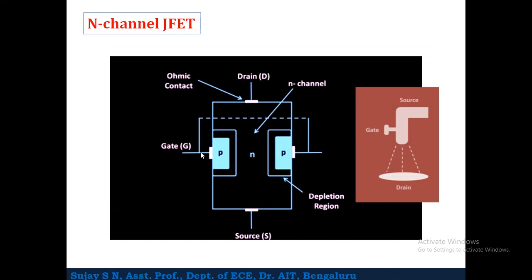For N-channel JFET: this device consists of three terminals. The drain terminal is at the top, the source terminal is at the bottom, and the two P regions on the sides are taken as the gate terminal. The two P regions are connected together and represented as gate G. The N region in between is the N channel, with one end as drain and the other as source. Ohmic contacts are provided at the terminals for connection purposes.